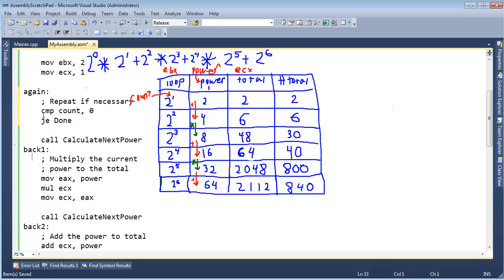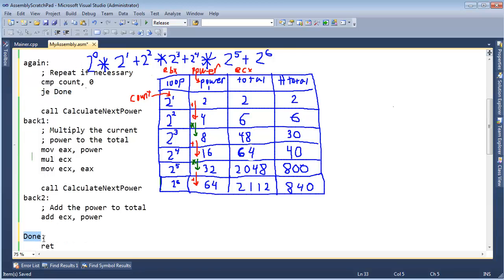So when we do 2 to the 0, we're done before we even started. We never iterate through this loop. We're done. Let's get out of here. And this will actually work for the cases 2 to the 1, 2 to the 2, 2 to the 3. We now check for our done condition at the beginning of the loop instead of the end.